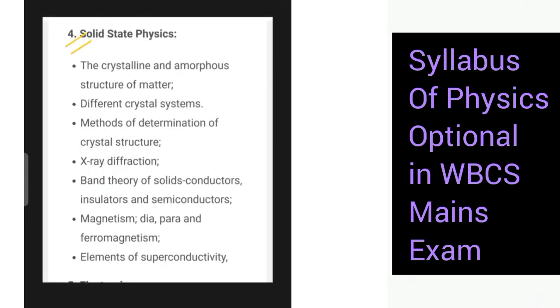Next we have this section on solid state physics, which deals with the crystalline and amorphous structure of matter, then different crystal systems, methods of determination of crystal structure, X-ray diffraction. Band theory of solids: conductors, insulators and semiconductors. Then magnetism: dia, para and ferromagnetism, elements of superconductivity.